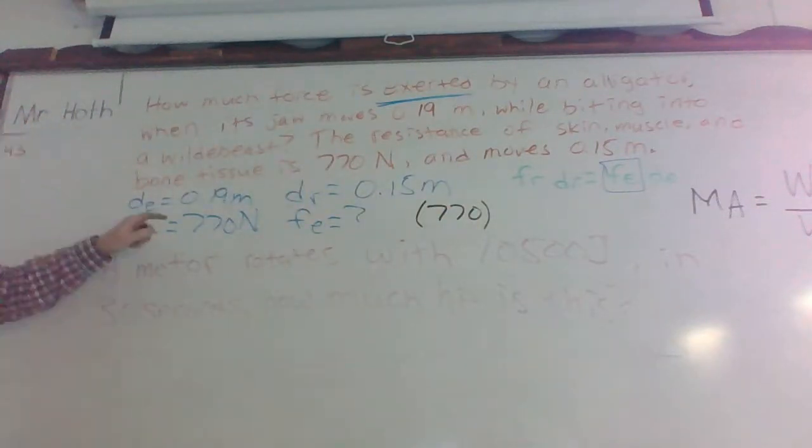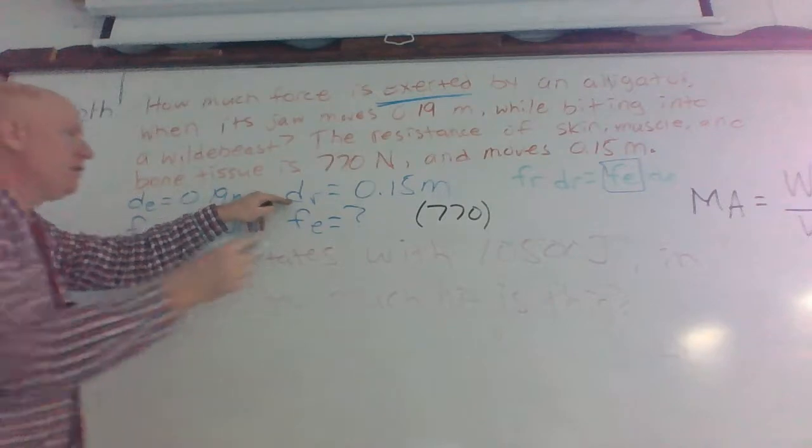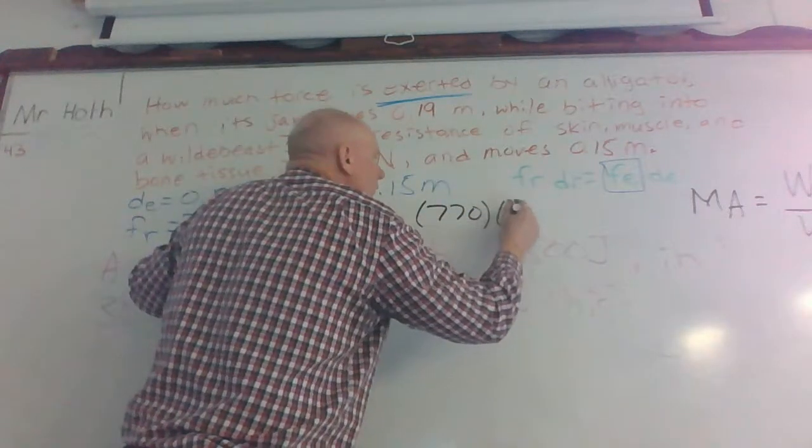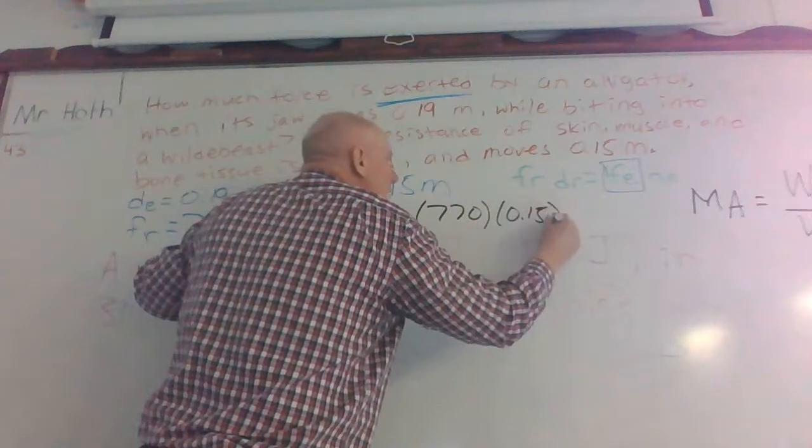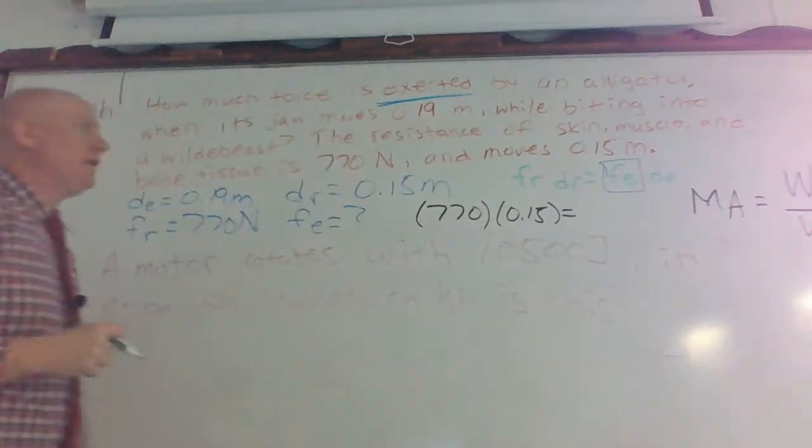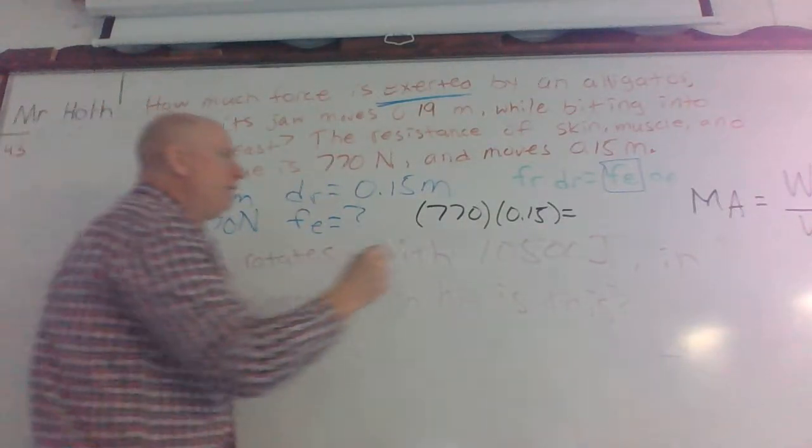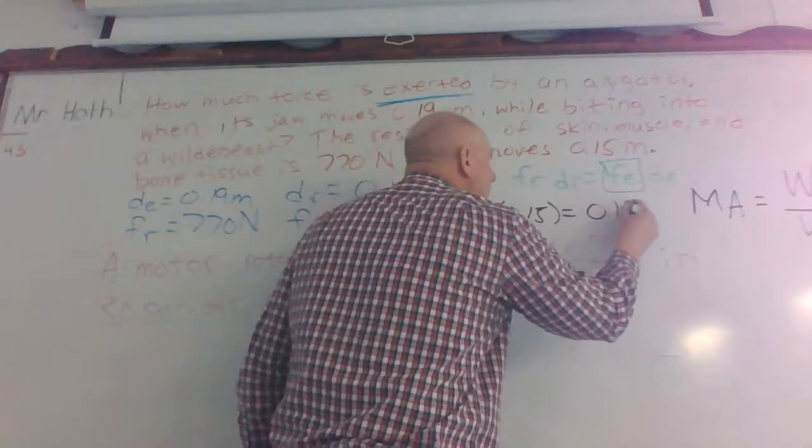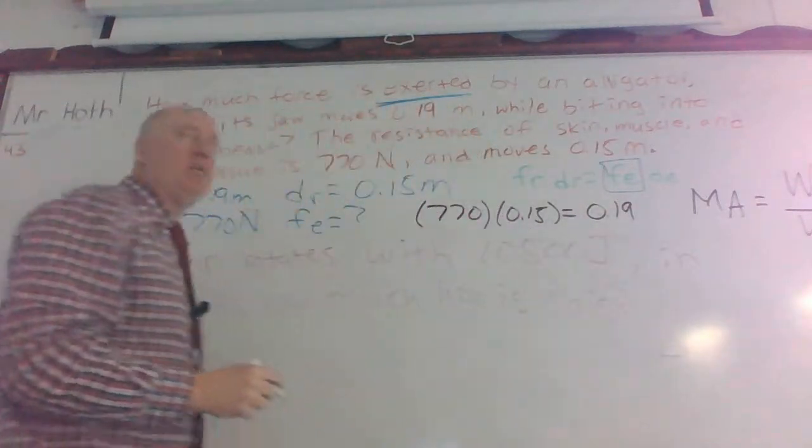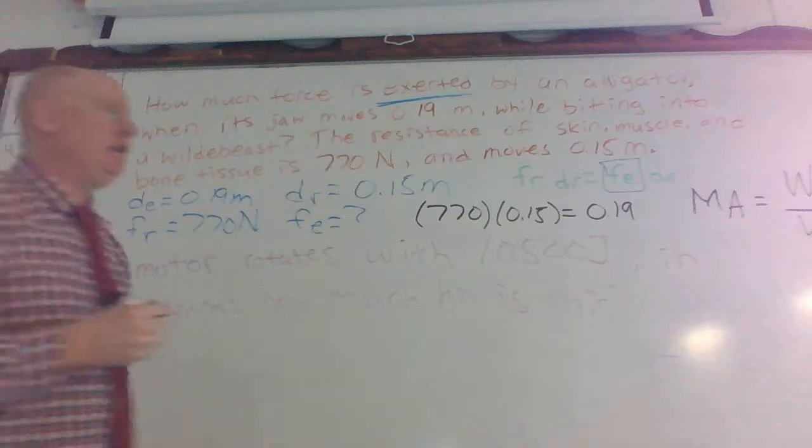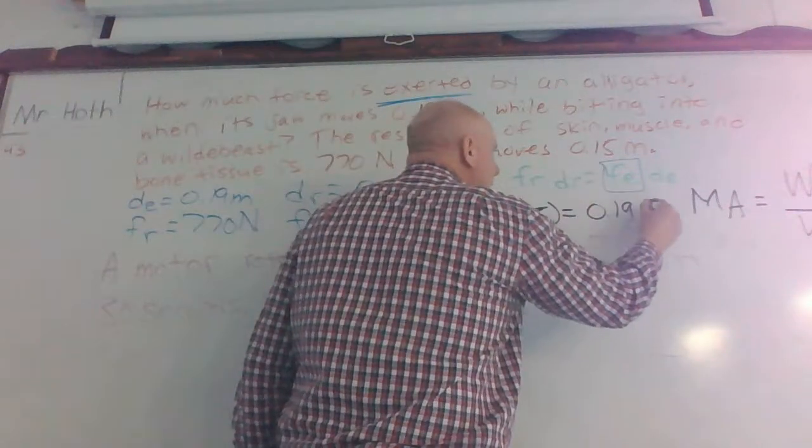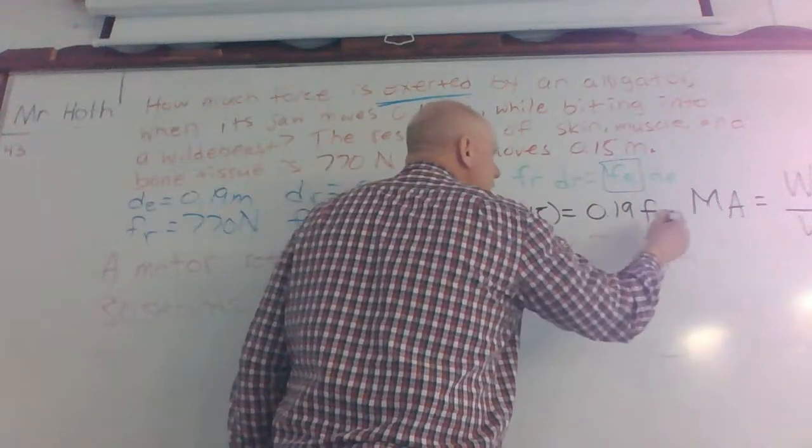Okay, what are we taking that times? Okay, so 0.15 from our distance resistance, okay, and what does that equal on the right-hand side? Okay, 0.19, and what's our variable? FE, okay, we can just put F there if you wanted to, or if you just want to put FE. It's whatever you're more comfortable with, okay?